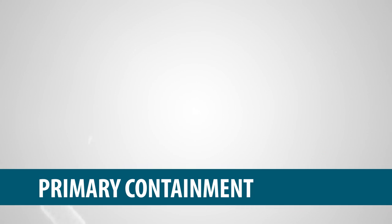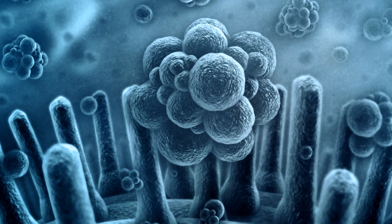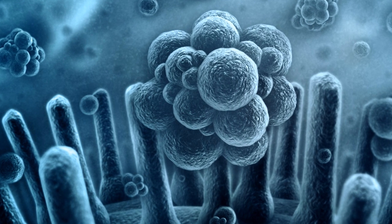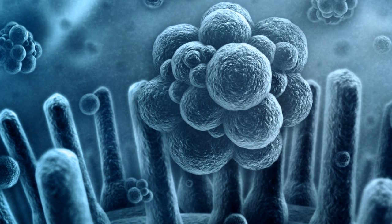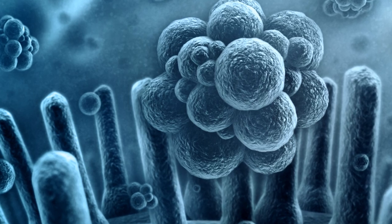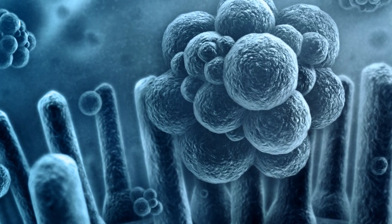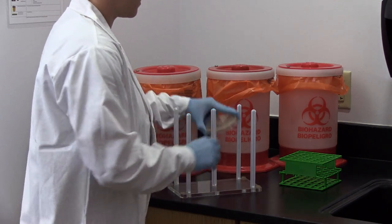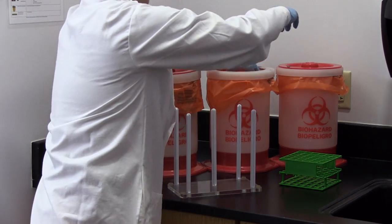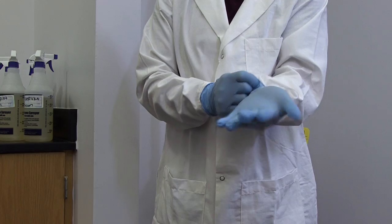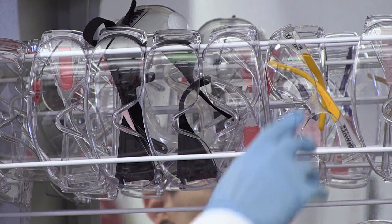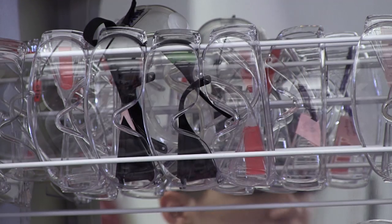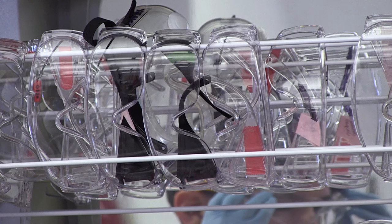Primary Containment concerns the protection of personnel and the laboratory environment from exposure to infectious microbes. Proper microbiological techniques, such as the safe transport and disposal of cultures, along with the correct use of personal safety equipment, such as gloves and safety goggles, go a long way toward accomplishing the goal of primary containment.